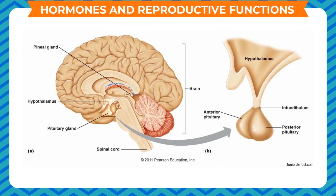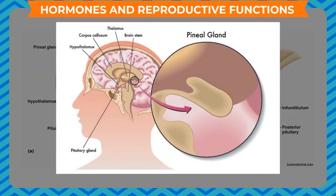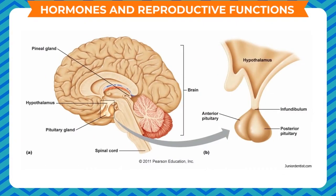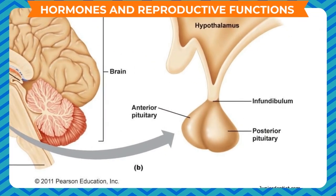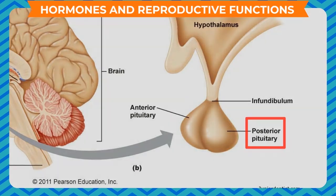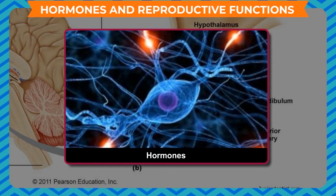The pituitary gland is located just below the hypothalamus in the brain. It is called the master gland because it controls the functioning of all the glands. It secretes growth hormone which controls the development of bones and muscles. A person having less growth hormone becomes a dwarf. Physiologically, the pituitary gland is divisible into two distinct portions: the anterior pituitary and the posterior pituitary. The hormones from the anterior pituitary play major roles in the control of metabolic functions throughout the body.